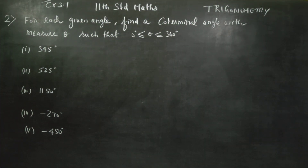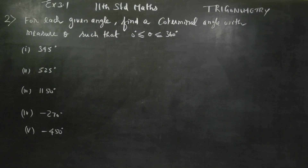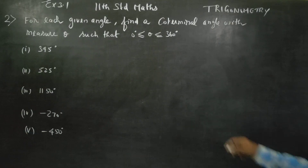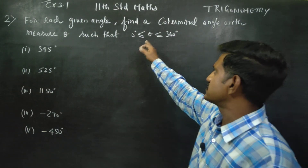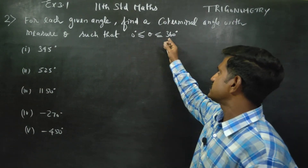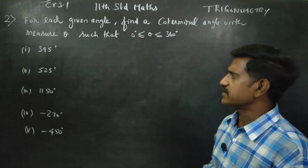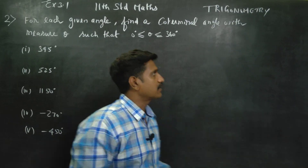Hello 11th standard students, I am Metro Karnagaran. In exercise number 3.1, for each given angle, find a co-terminal angle with the measure theta such that 0 is less than or equal to theta is less than 360 degrees.